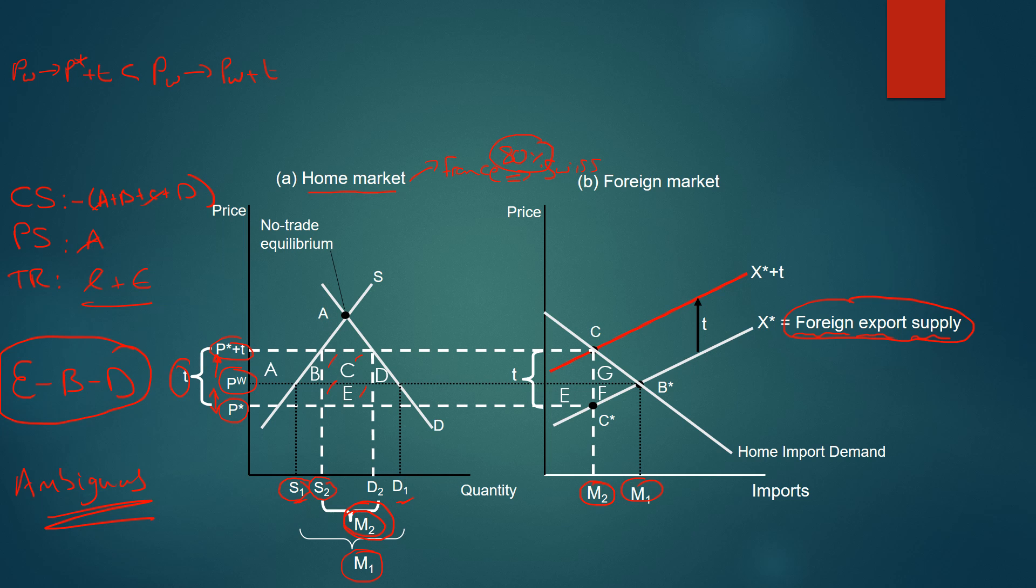Quick thing to add here. E can be seen as the terms of trade gain for the domestic market. This is because they forced down imports into their economy to P star, and therefore, they get a gain in terms of trade. Terms of trade is the amount of exports they get for every import. As imports have now reduced in price, they now get a terms of trade gain of E.